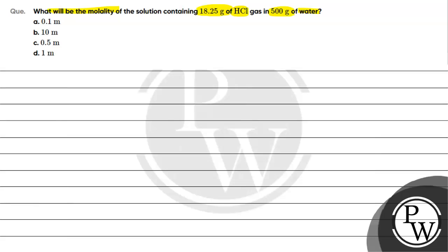Option A is 0.1 molal. Option B is 10 molal. Option C is 0.5 molal. Option D is 1 molal.